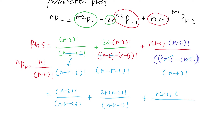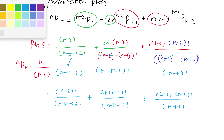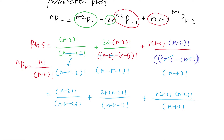So we finalize everything and copy everything down. When we have different fractions added together, we need to make sure they have the same common denominator.